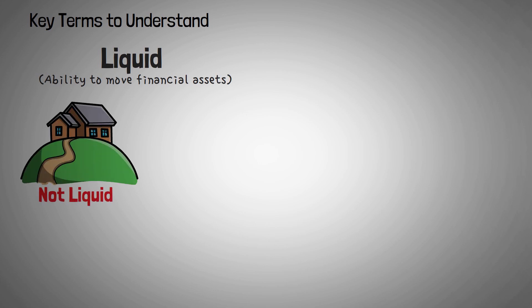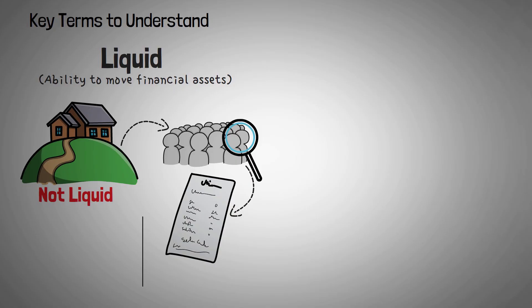Another term you'll want to get used to is liquid. Basically, the ability to move financial assets is referred to as liquidity. When you own a house, the value of the house is not that liquid, because it would probably take you months to find a buyer, write a contract, and then actually sell and move out of the house. On the other hand, cash is very liquid, because you can immediately use it to buy things.